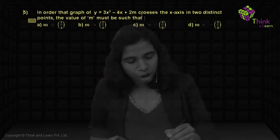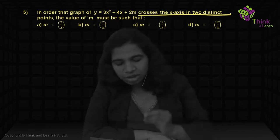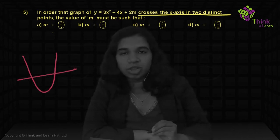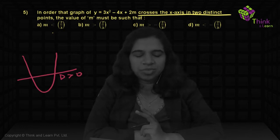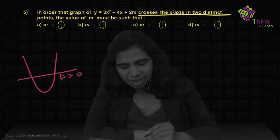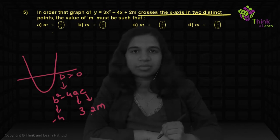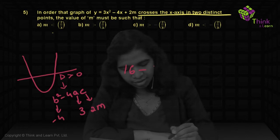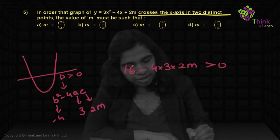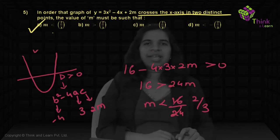Question 5: the graph of a quadratic equation crosses the x-axis at two distinct points. This means the parabola is upward-facing (A is positive) and there are two real roots, which means D > 0. D = B² − 4AC. Here A = 3, B = −4, C = 2M. So 16 − 24M > 0, giving M < 16/24 = 2/3, which is option A. This is a nature of roots question.